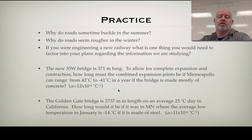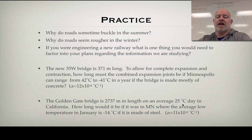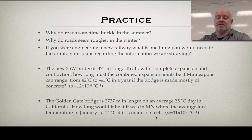Let's solve for how big those joints need to be. For the second problem: the Golden Gate Bridge is 2737 meters in length on an average 25°C day in California. How long would it be if it were in Minnesota, where the average low temperature in January is negative 14°C, if it's made of steel? So if we took this bridge and moved it from California to Minnesota, how much would it shrink? Pause the video, solve them both, and when you're ready we'll give you the answers.